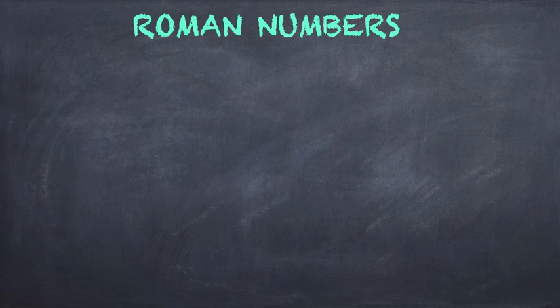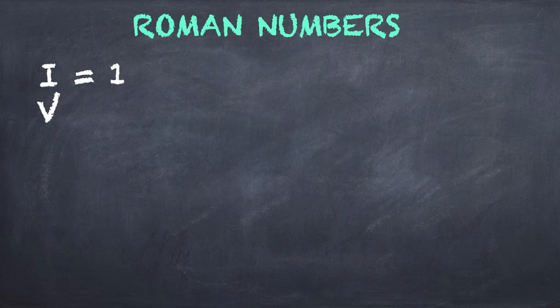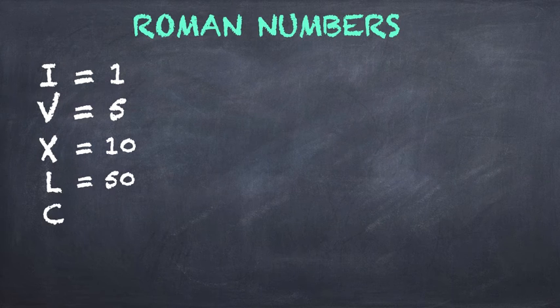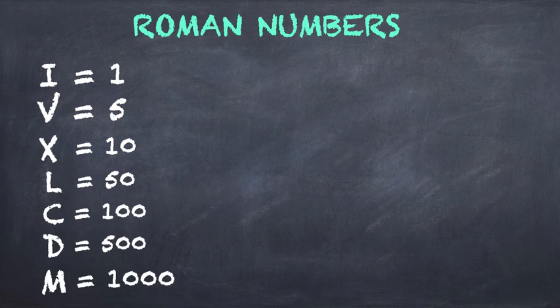We have Roman numbers for our centuries and they look like this. An I means 1, V is 5, X is 10, L is 50, C is 100, D is 500, and M is a thousand.